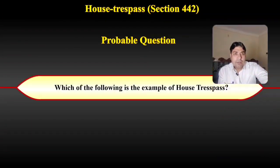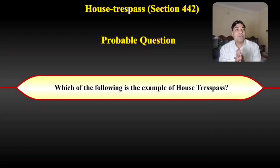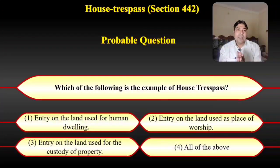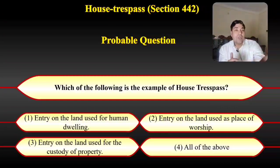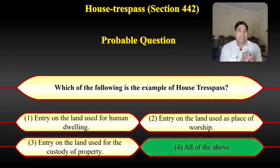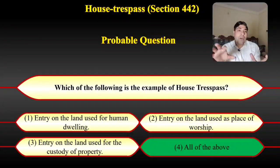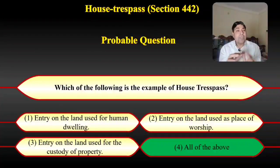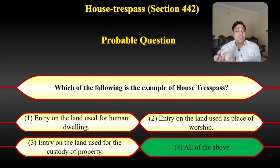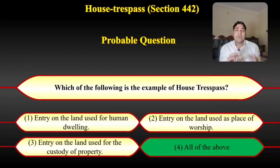Probable question: Which of the following is an example of house trespass? (A) Entry on land used for human dwelling, (B) entry on land used as a place of worship, (C) entry on land used for the custody of property, (D) all of the above. The correct answer is 'all of the above,' because all three categories — human dwelling, place of worship, and custody of property — fall within the definition of house trespass.